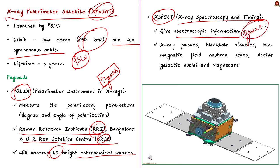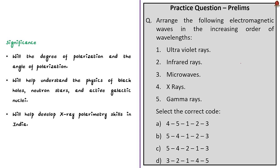The XSPECT payload will give spectroscopic information. It would observe several types of sources like X-ray pulsars, black hole binaries, low magnetic field neutron stars, active galactic nuclei, and magnetars. This is about the payloads in the XPoSat mission. Now let us conclude this discussion by seeing the significance of the mission.